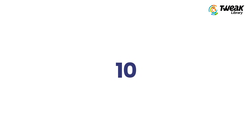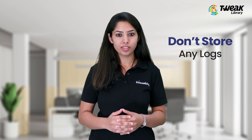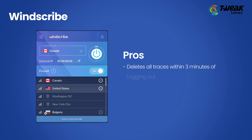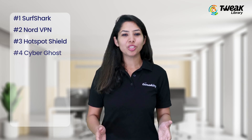In the end we have Windscribe, which offers 10 GB of data per month. Along with great speed, it does not store logs like many others. It deletes all traces within three minutes of logging out and is thus famous for its high privacy. For those who tweet about their services, there is an extra 5 GB available, making it a whopping 15 GB per month. On the downside, the internet connection slows down more than 50 percent with Windscribe, and all the servers available do not remain active every time.